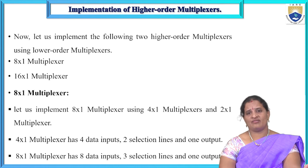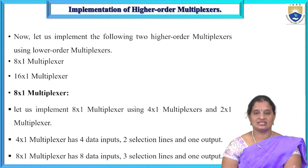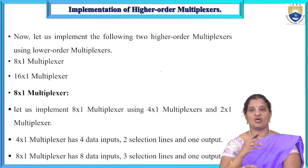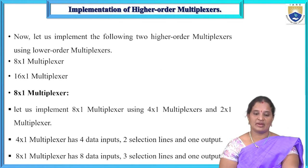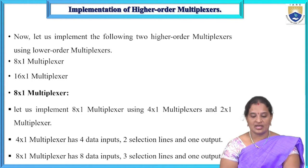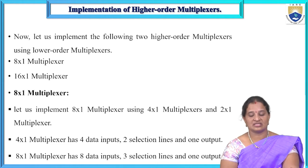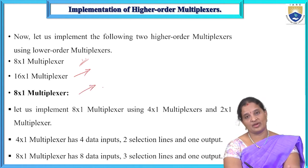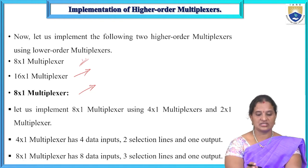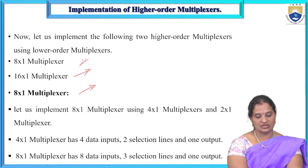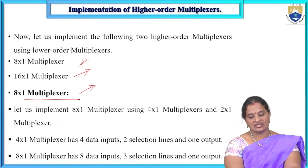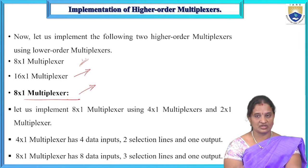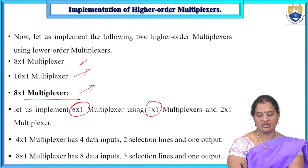We can have any size multiplexer where the number of data input lines is expressed as a power of 2. As the size of the multiplexer increases, the number of logic gates required also increases. To reduce complexity, we can implement higher order multiplexers using lower order multiplexers — such as implementing an 8 by 1 MUX using 4 by 1 and 2 by 1 MUX, or a 16 by 1 MUX using 4 by 1 MUX. Let us implement an 8 by 1 MUX using 4 by 1 and 2 by 1 MUX.